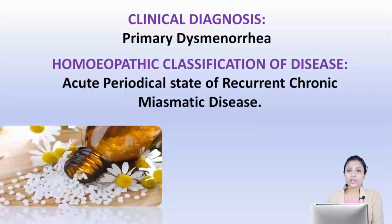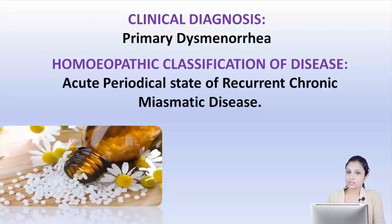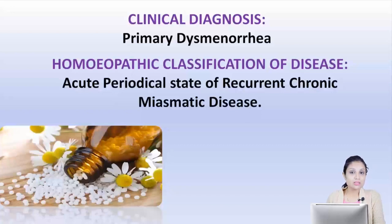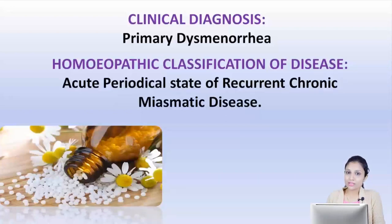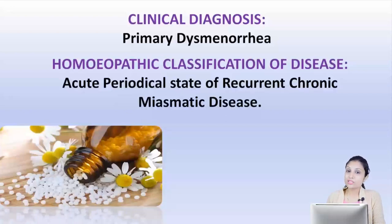When we look at the homeopathic or Hahnemannian classification, since she has been getting this pain for the past five to six months, it is obviously a chronic miasmatic disease. However, we need to control the pain she is experiencing right now, and that is why it is an acute periodical state of a chronic miasmatic disease. We first deal with the acute complaints and then move on to giving a constitutional or anti-miasmatic remedy.